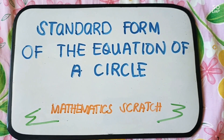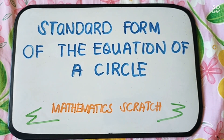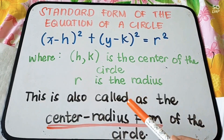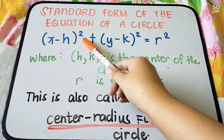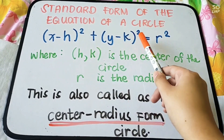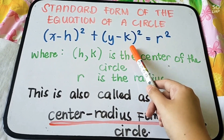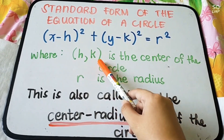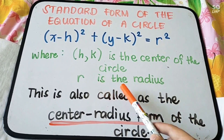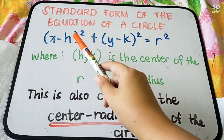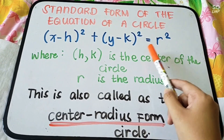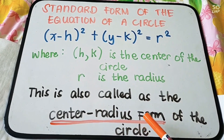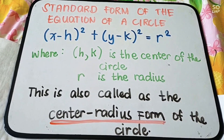Hi guys! So today, we are going to tackle the standard form of the equation of a circle. Our equation for the standard form is: (x minus h) squared plus (y minus k) squared is equal to r squared, where h and k is the center of the circle and r is the radius. This standard form is also called the center-radius form of the circle.